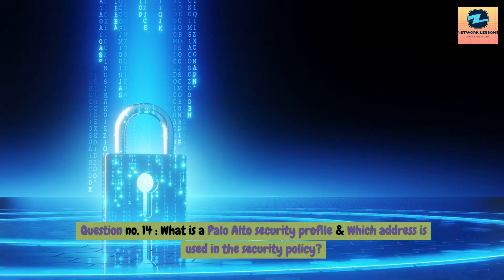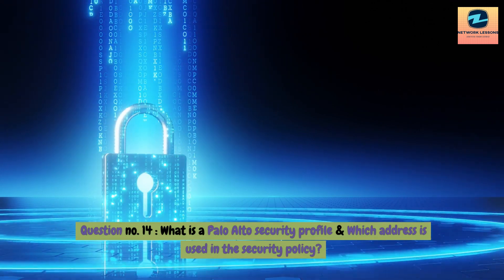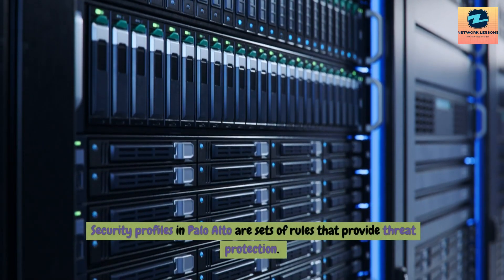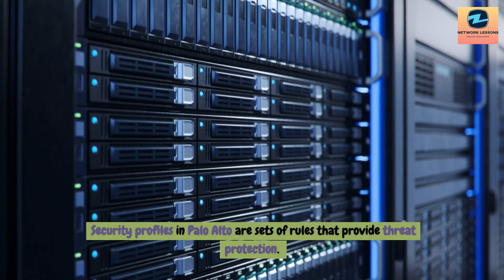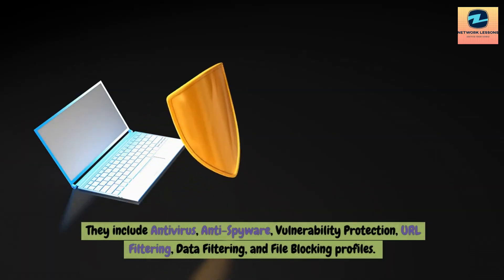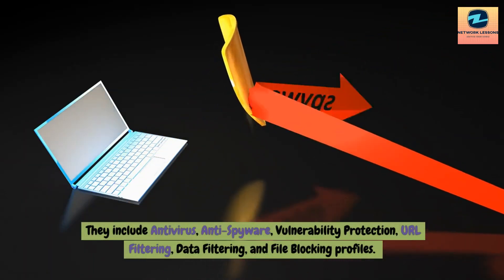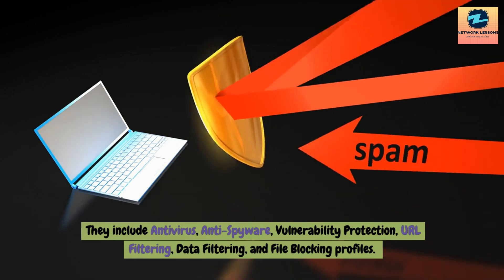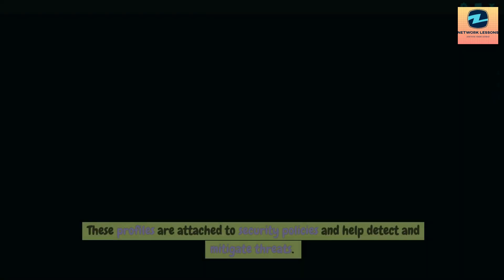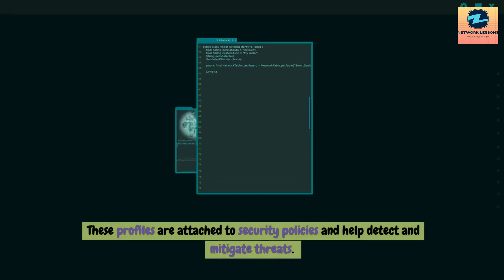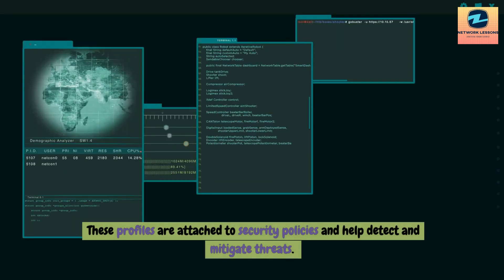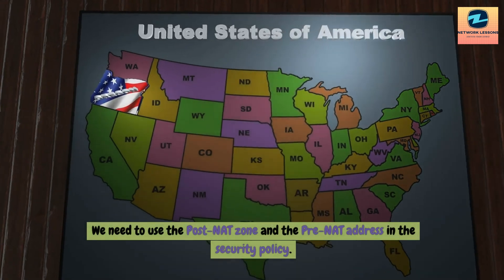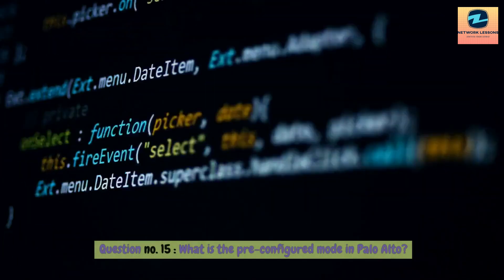Question 15: What is a Palo Alto security profile and which address is used in the security policy? Answer: Security profiles in Palo Alto are sets of rules that provide threat protection. They include anti-virus, anti-spyware, vulnerability protection, URL filtering, data filtering, and file blocking profiles. These profiles are attached to security policies to detect and mitigate threats. The post-NAT zone and the pre-NAT address are used in the security policy.